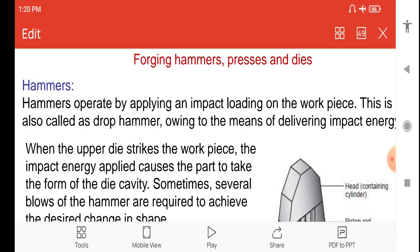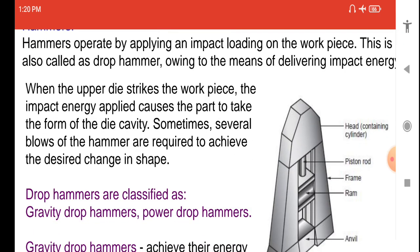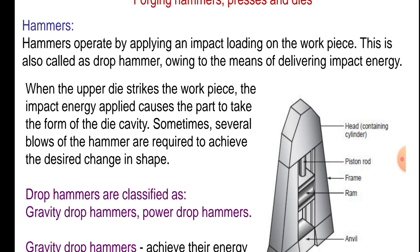Hammers operate by applying an impact loading on the workpiece. This is also called a drop hammer, owing to the means of delivering impact energy. When the upper die strikes the workpiece, the impact energy applied causes the part to take the form of the die cavity. Sometimes several blows of the hammer are required to achieve the desired change in shape.